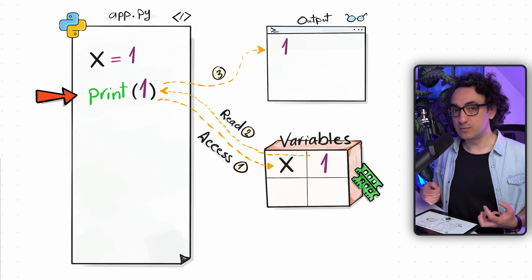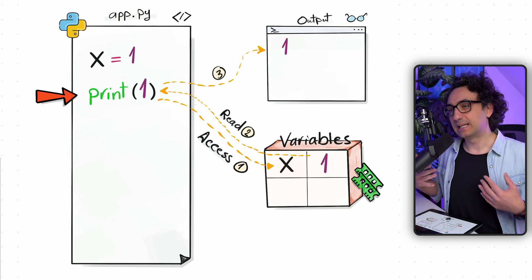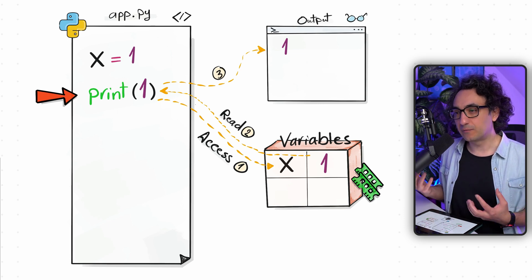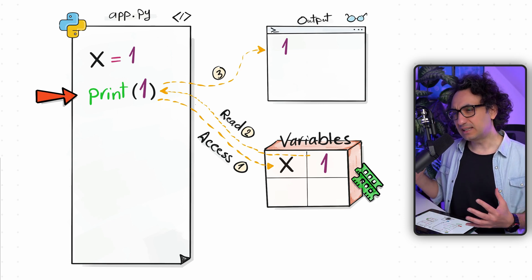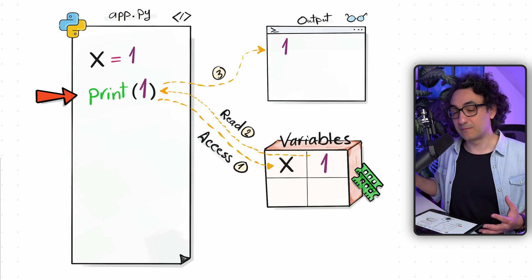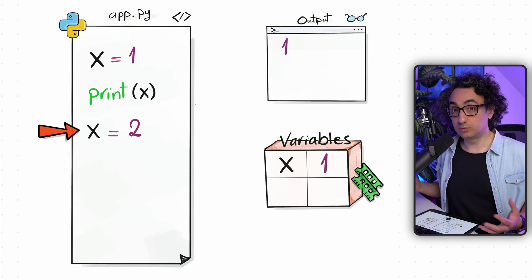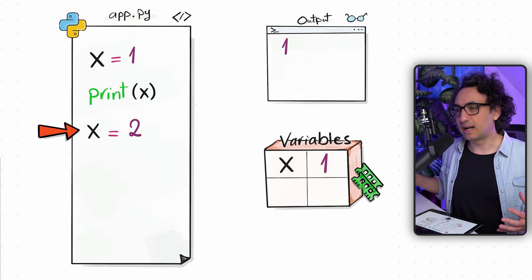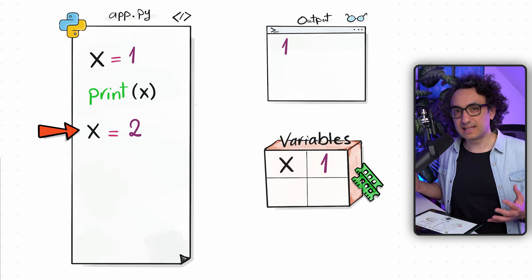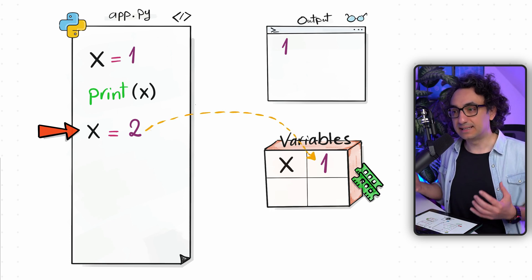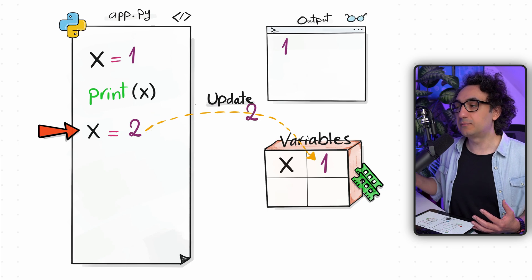Now let's say in the next steps we have to update the value of this variable — forget about the one, store two instead. To update the value, we use the same syntax: x equals two. Once executed, Python goes to the variables and sees it already has an x, so it doesn't create a new one — it just updates its value from one to two. From this point, x is equal to two inside the memory.